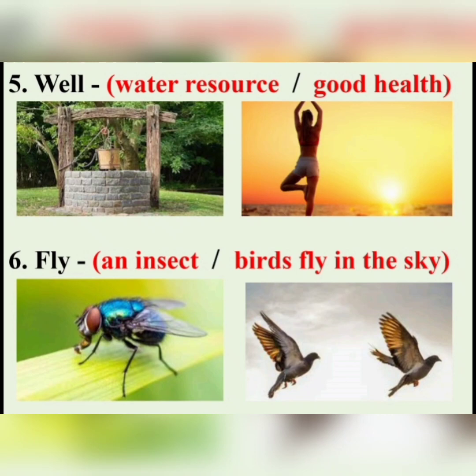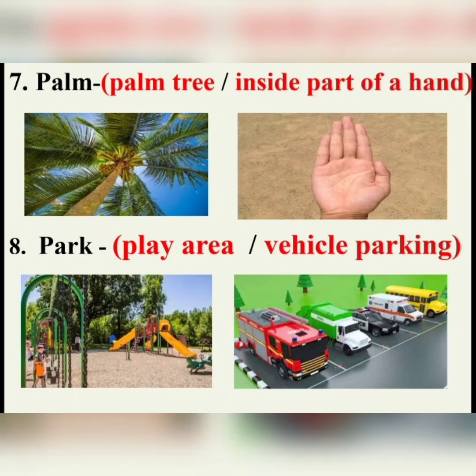The next example is 'fly' — an insect. Those small insects are called flies. And then 'birds fly in the sky.' The first usage of fly is a noun, and the next one is a verb.